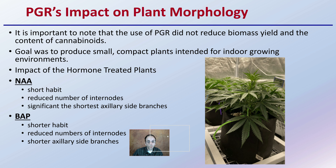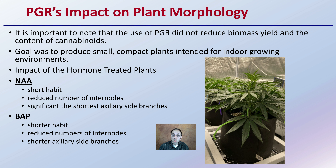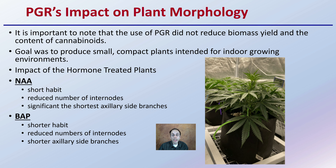It is important to note that the use of PGRs did not reduce the biomass yield or the content of cannabinoids. The goal is to produce small, compact plants intended for indoor growing environments — for example, a grow tent where space is limited. NAA produced a short habit plant, reduced the number of internodes, and resulted in the shortest axillary side branches. The cytokinin-based hormone BAP also created a shorter habit, reduced number of internodes, and shorter axillary side branches — both creating a more compact plant, which might be advantageous for some growers.